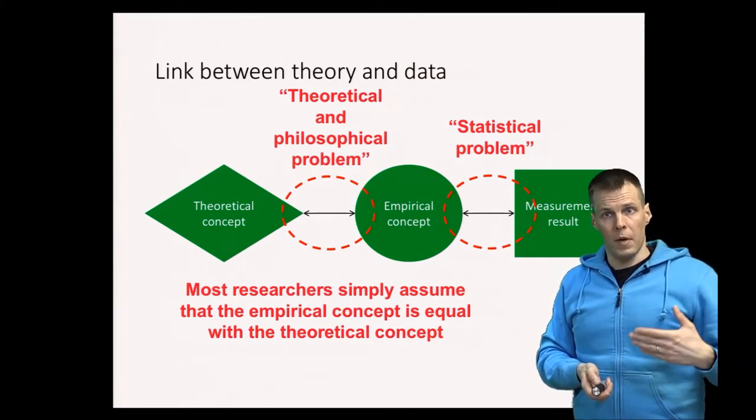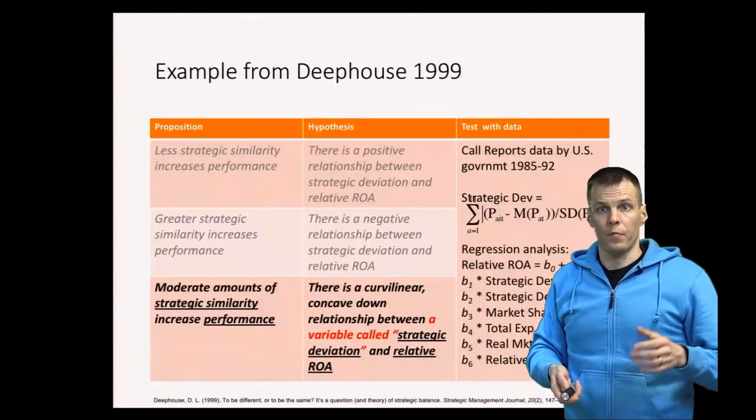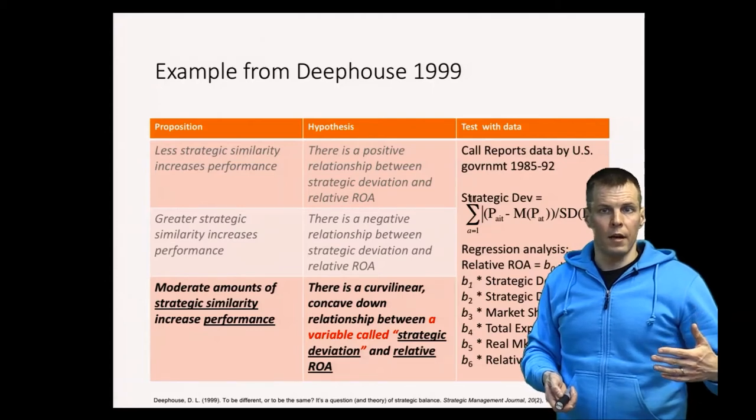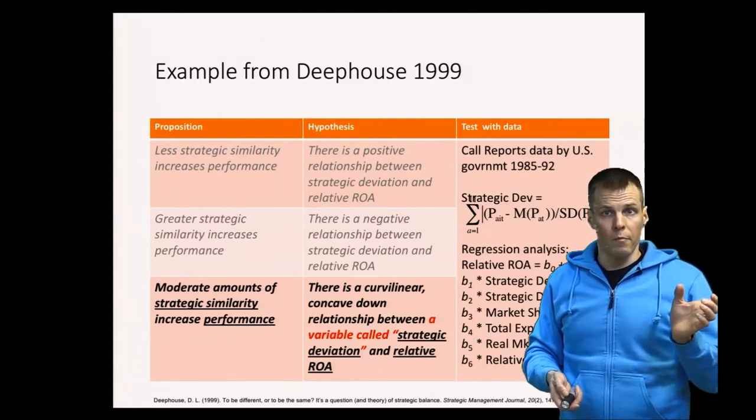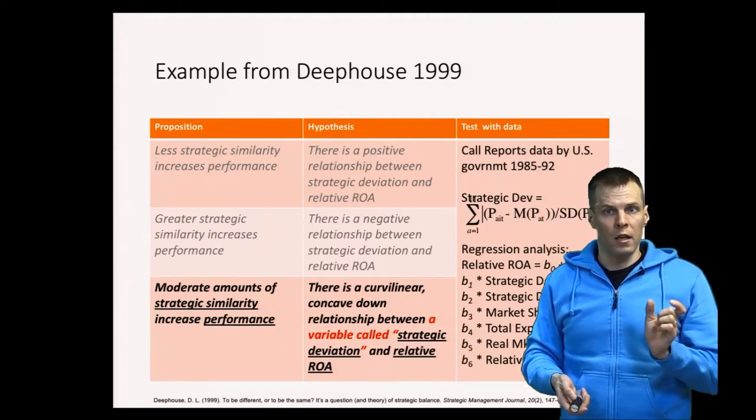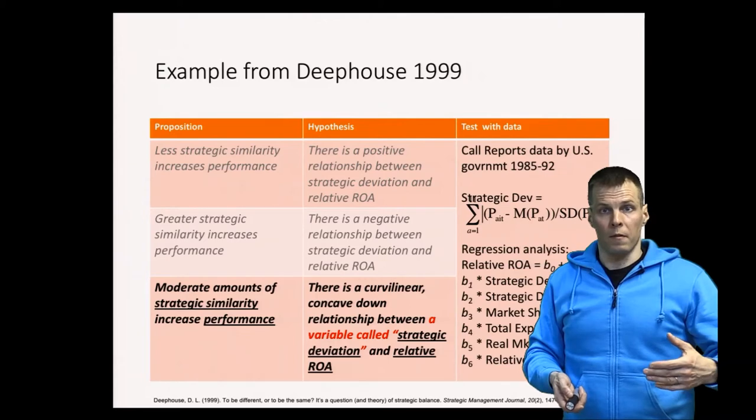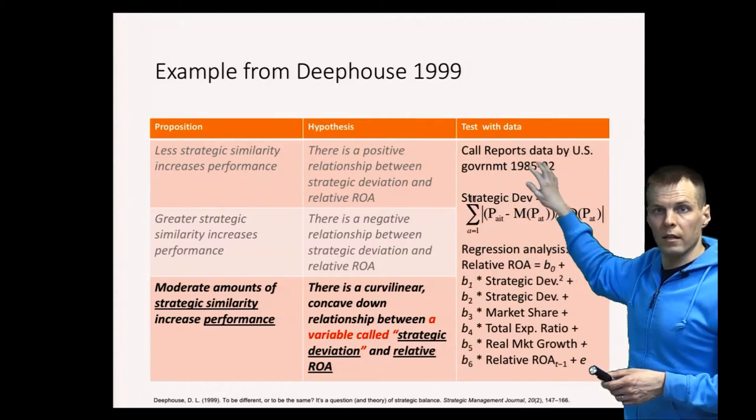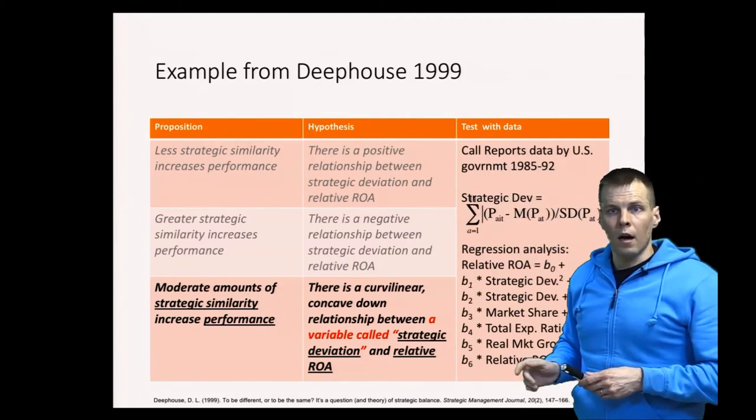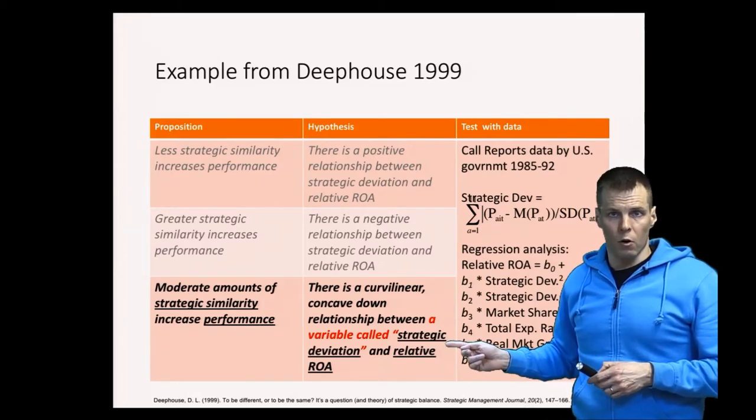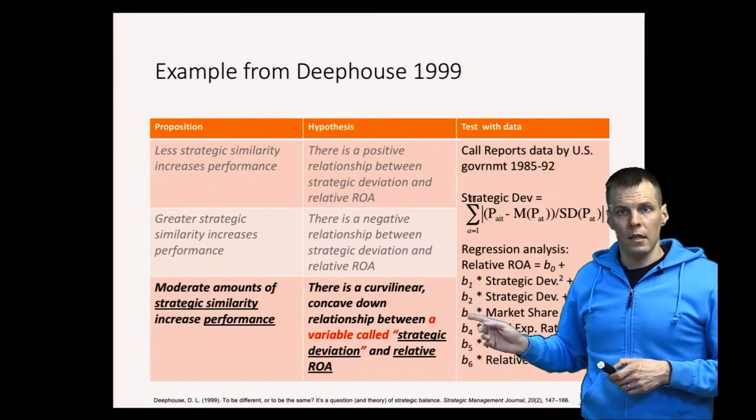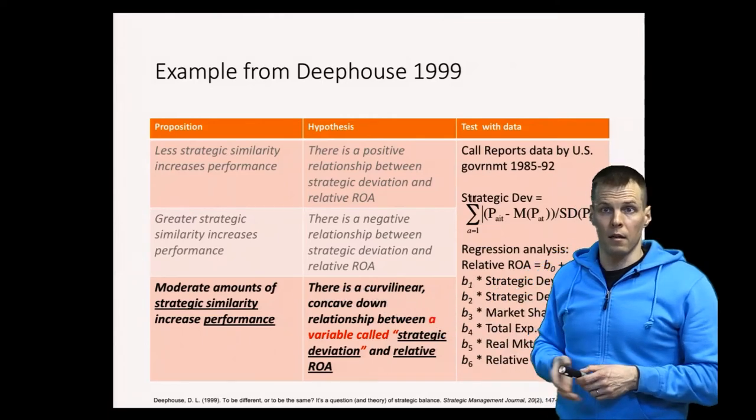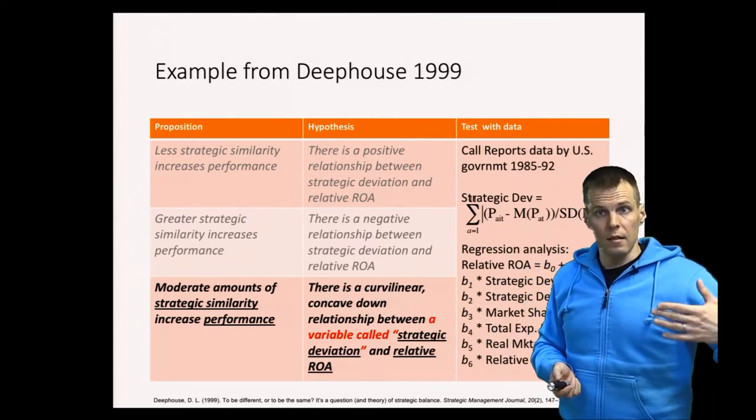Let's take a look at how Deephouse's paper does this kind of thinking. They had a proposition about strategic similarity and performance. Then they are using relative ROI as their performance measure and strategic deviation as their empirical concept measuring strategic similarity. And then they had some data to calculate this result. How do we argue that strategic deviation is a valid measure of strategic similarity? Simply the fact that it's labeled similarly to strategic similarity doesn't really mean anything.